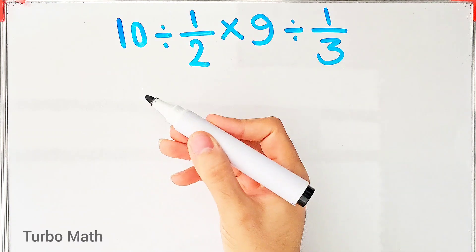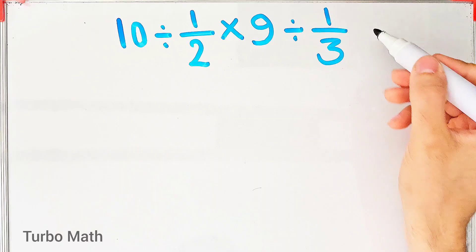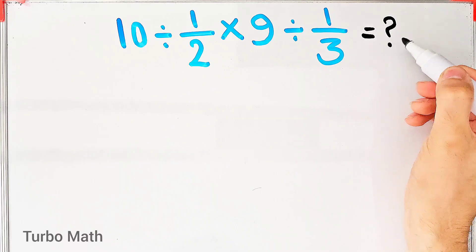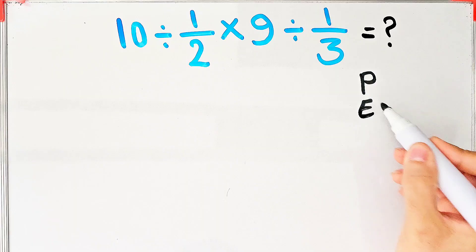Hi guys, welcome to Turbo Math channel. 10 divided by 1 over 2 times 9 divided by 1 over 3. What is the answer of this question? Can you solve it? To solve this question we need to follow the order of operations.